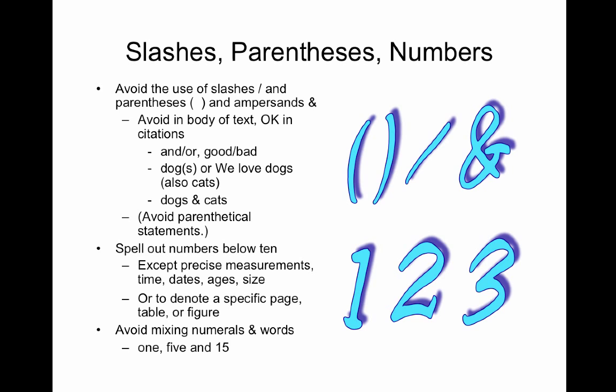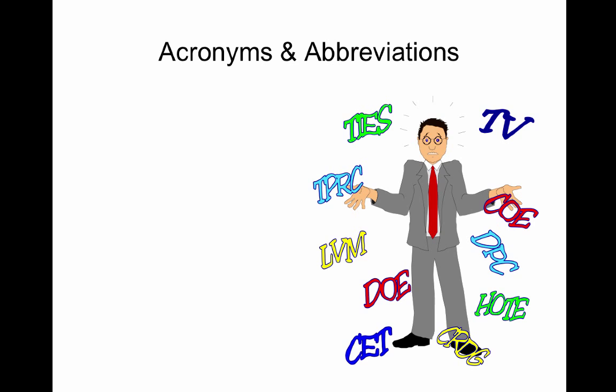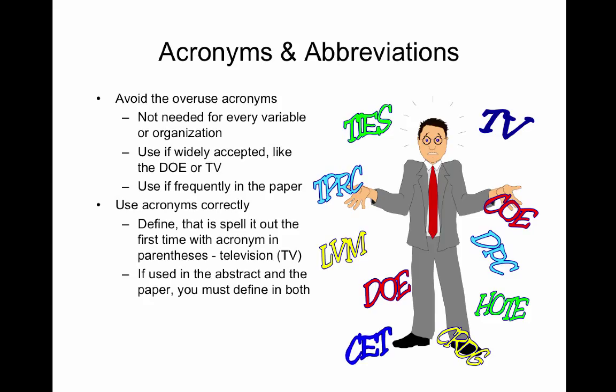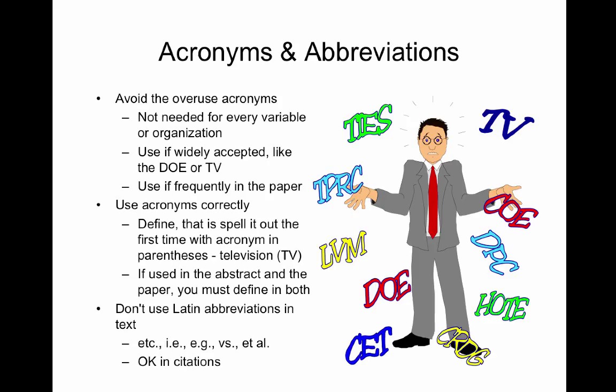Acronyms and abbreviations — there are a lot of them. Avoid the overuse of these; they're not needed for every variable or organization. If they're widely accepted, like DOE or TV, you can use them. The problem is something like DOE can be both Department of Education or Department of Energy. Use it if it's frequently in the paper, but make sure you use your acronyms correctly. Define — that is, spell it out the first time with an acronym in parentheses. For example, television (TV). If you use acronyms in the abstract, you must also define it in the paper. Don't use Latin abbreviations in the text, such as etc., i.e., e.g., vs., and et al., but it's okay to use these in citations.